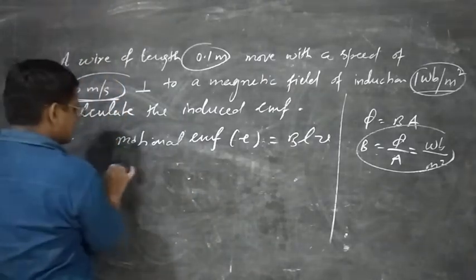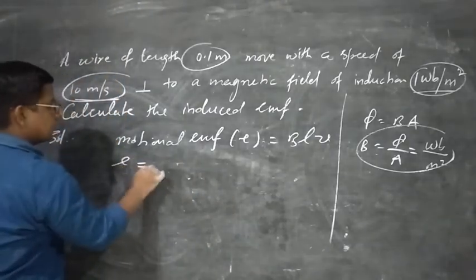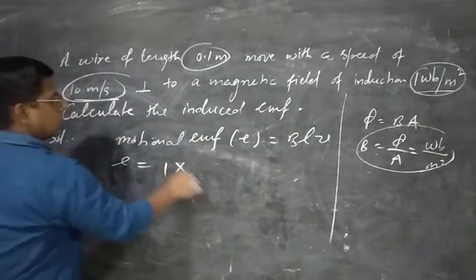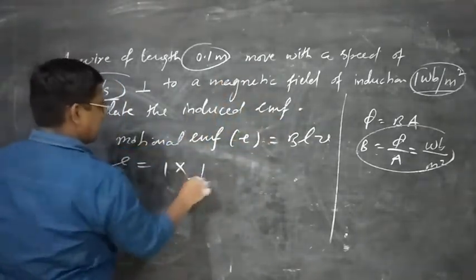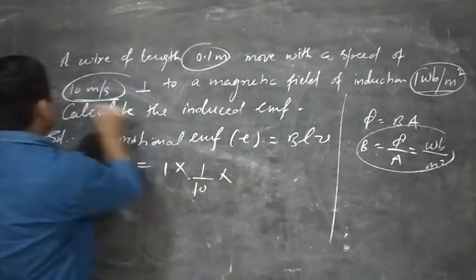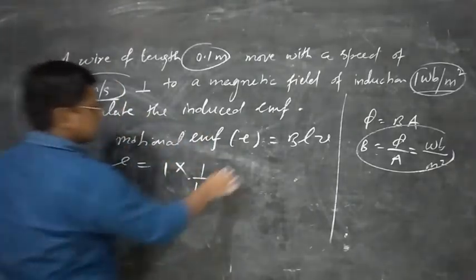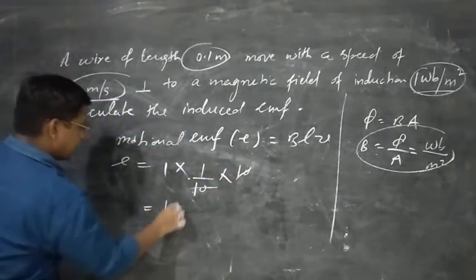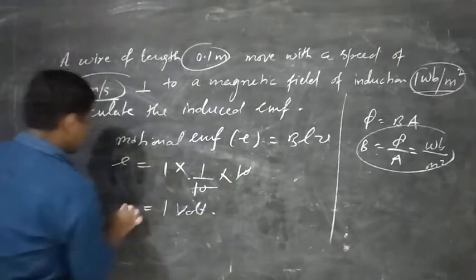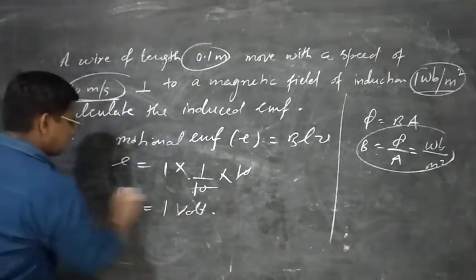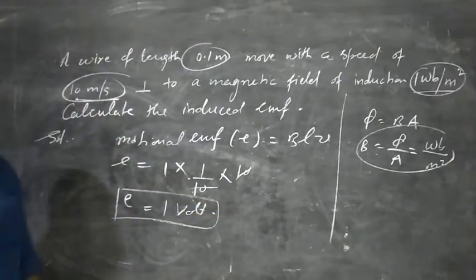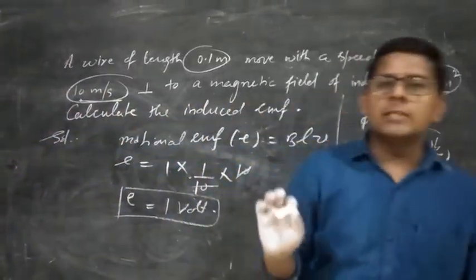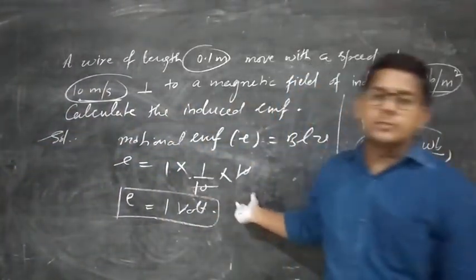Using these values: E is equal to B into L into V. B is 1, length is 1/10 (i.e., 0.1 meter), and velocity is 10 meter per second. So you can cancel out — 1 volt is your answer. Easily you can solve this small one-mark question.